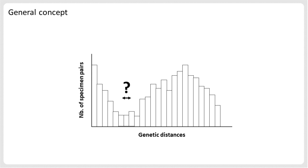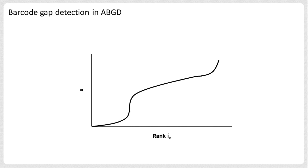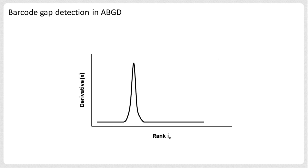The main goal of ABGD is to propose a method to automatically identify the barcode gap, even in case of overlapping distributions, that is not subjective and thus reproducible. Instead of looking at the pairwise distribution of genetic distances, the approach mainly consists of ranking the genetic distances from the lowest to the highest distance value and plotting the ranks on the x-axis against the distance values on the y-axis. The obtained curve is sigmoidal, with the inflection point of the curve corresponding to the barcode gap. By simply taking the derivative of this curve, one can easily identify the maximum of the derivative. This maximum corresponds to the inflection point of the previous curve and thus to the barcode gap, and can therefore be used as a threshold to separate intraspecific from interspecific distances in order to propose species hypotheses.